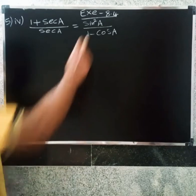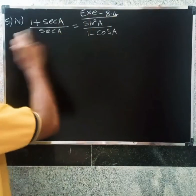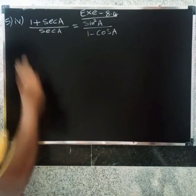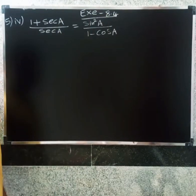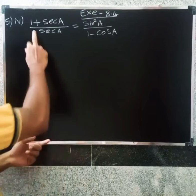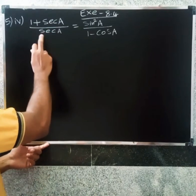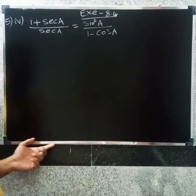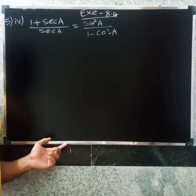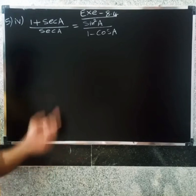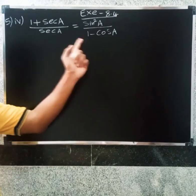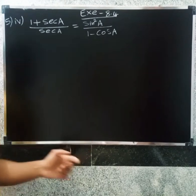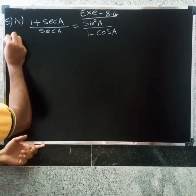Welcome friends. This is exercise 8.4, 5th question, 4th denominator. The equation is: 1 plus cos A divided by cos A equals sin²A divided by 1 minus cos A. We identify LHS and RHS, and begin with the LHS.